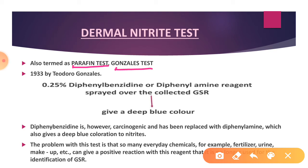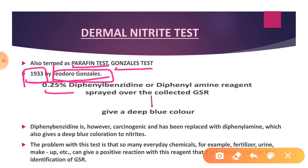The Gonzels Test was developed by scientist Theodoro Gonzels. This test was developed in 1933. The reagent used is diphenylbenzidine at 0.25% concentration, and a deep blue color is produced upon a positive reaction.